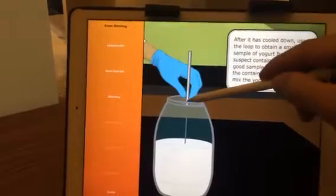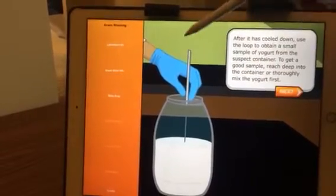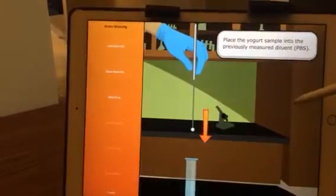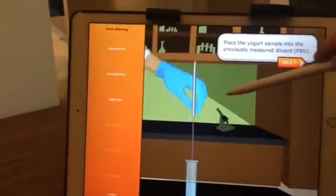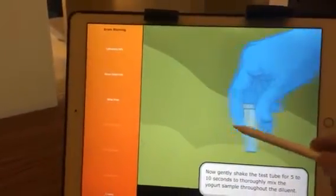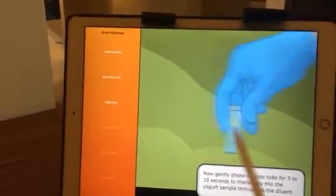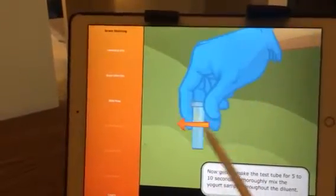After it has cooled down, use the loop to obtain a small sample of yogurt from the suspect. Place the yogurt sample into the previously measured diluent. Now, gently shake the test tube for 5 to 10 seconds to thoroughly mix the yogurt sample throughout the diluent.